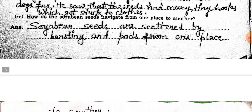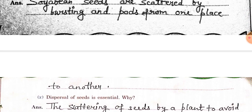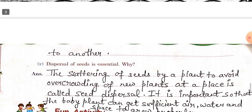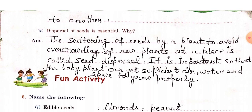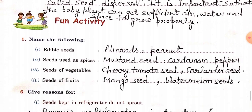Next question: how do soya bean seeds travel from one place to another? Soya bean seeds are scattered by bursting pods from one place to another. Why is dispersal of seeds essential? The scattering of seeds by a plant to avoid overcrowding of new plants at a place is called seed dispersal. It is important so that the baby plant can get sufficient air, water and space to grow properly.